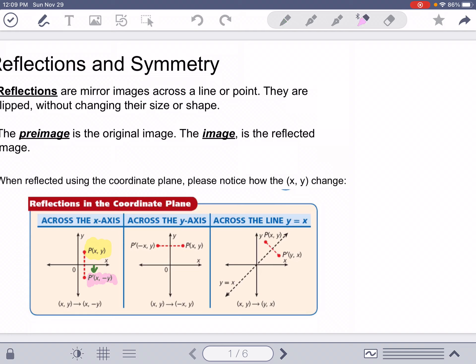Now, when we reflect across the y equals x, which is this line right here that kind of goes straight through the middle, the x and y values flip-flop. The x becomes the y, and the y becomes the x.